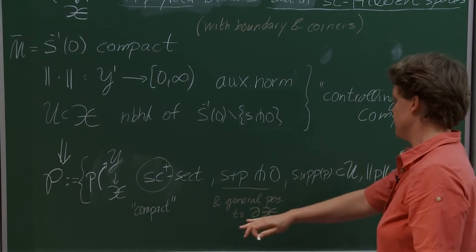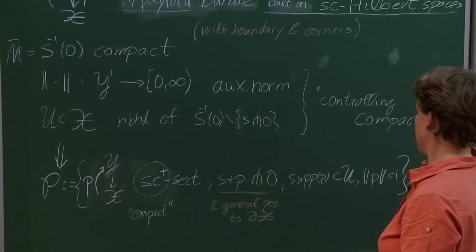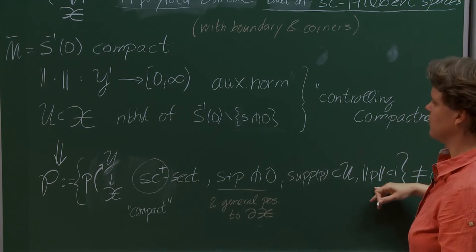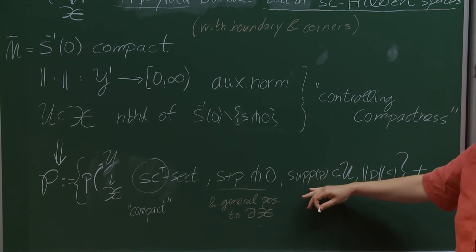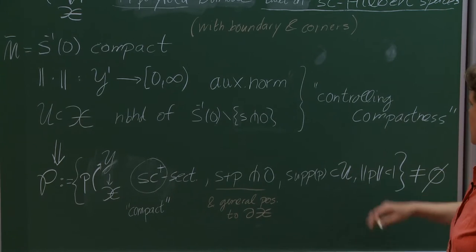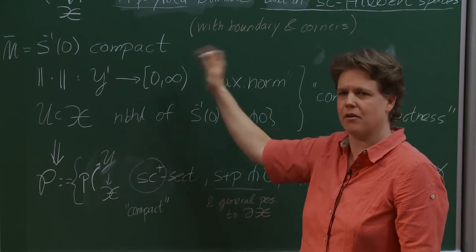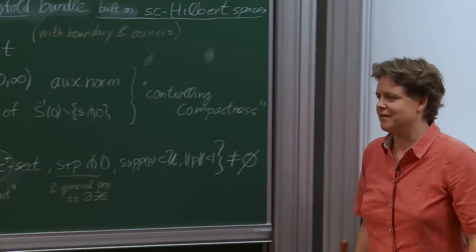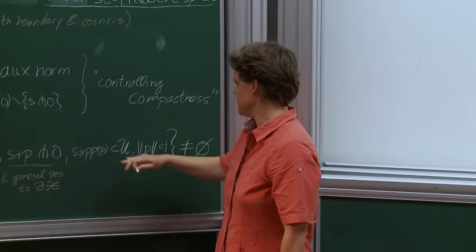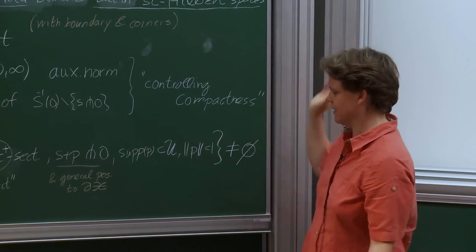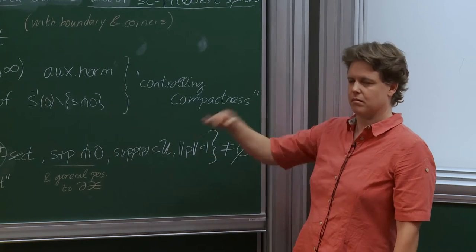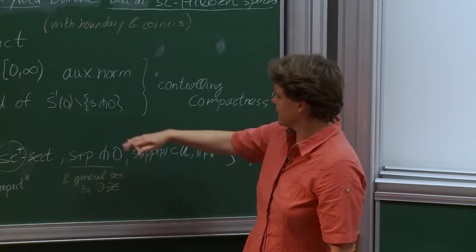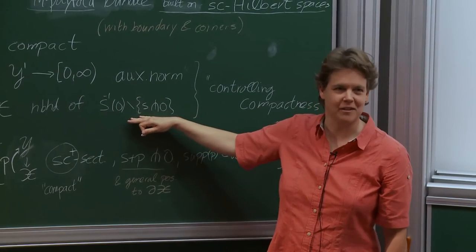These SC-plus sections are transverse — in general position to the boundary if there is boundary. I'm allowing myself to fix a neighborhood of the zero set and a norm, forcing the perturbation to only happen in that neighborhood and to be bounded by that norm. Since I can scale, I can make my perturbations as small as I want. That means you don't need any genericity or omega — you can make your perturbed zero set as close to the unperturbed as you want. There is also the 'Obamacare' rider: if you like your solutions, you can keep your solutions.